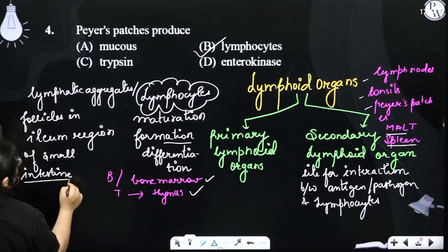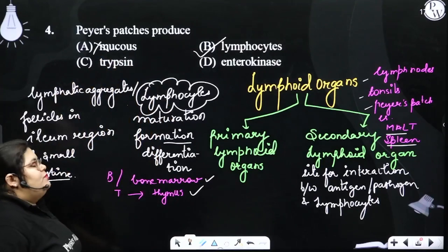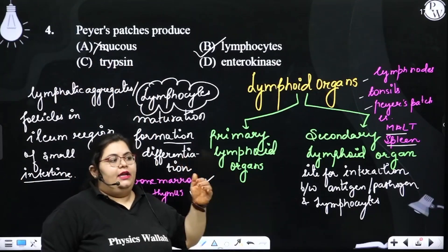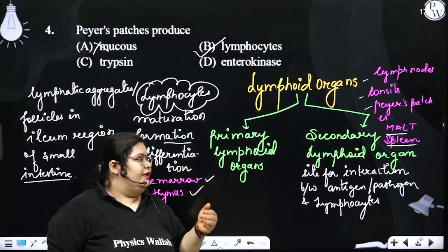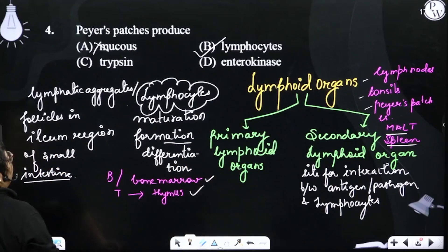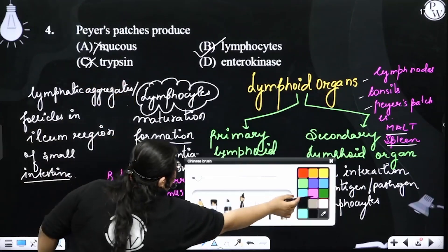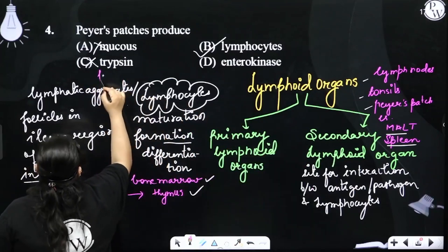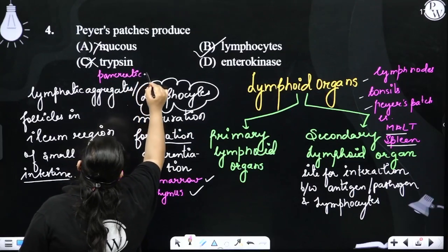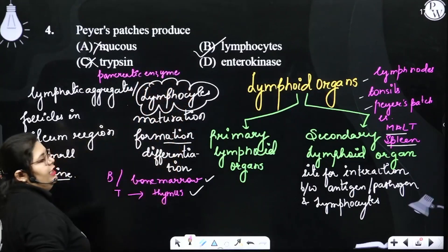So it will make lymphocytes. Mucus is not Peyer's patches. Mucus is lining in the digestive tract, respiratory tract, or reproductive tract. Trypsin is a pancreatic enzyme, a protein digesting proteolytic enzyme.